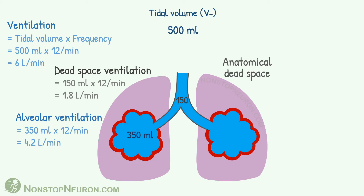Thus, out of 6 liters of fresh air that we breathe every minute, only 4.2 liters enters into the alveoli and is actually useful. The remaining 1.8 liters ventilates the dead space and is not useful in gas exchange. Please note that air already present in the airways before inspiration has been ignored to keep the discussion simple.